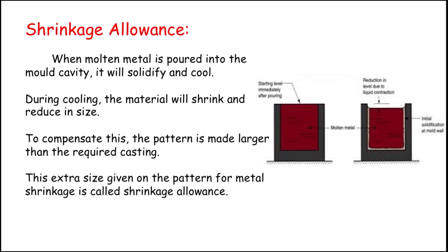This is called shrinkage allowance. If we forget to give this shrinkage allowance, the casting we get finally will be undersized. It will not be reworked, so we have to destroy it and reuse it by melting again. We have to take the mold, pour the molten metal again, and give the shrinkage allowance.